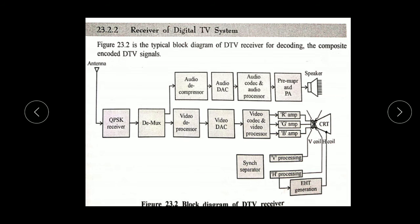There may be different types of filters available in the audio processor. After processing, the signal is converted back to analog and sent to the pre-amplifier, and then the amplifier sends it to the speakers. Similarly for the video processor, we send the signal to the video DAC — digital-to-analog conversion — and then to the video processor. After processing, it is sent to the CRT by three different colors: RGB. There are also two types of signals: vertical and horizontal processing, which are deflecting signals that deflect the CRT beams in the X and Y directions.